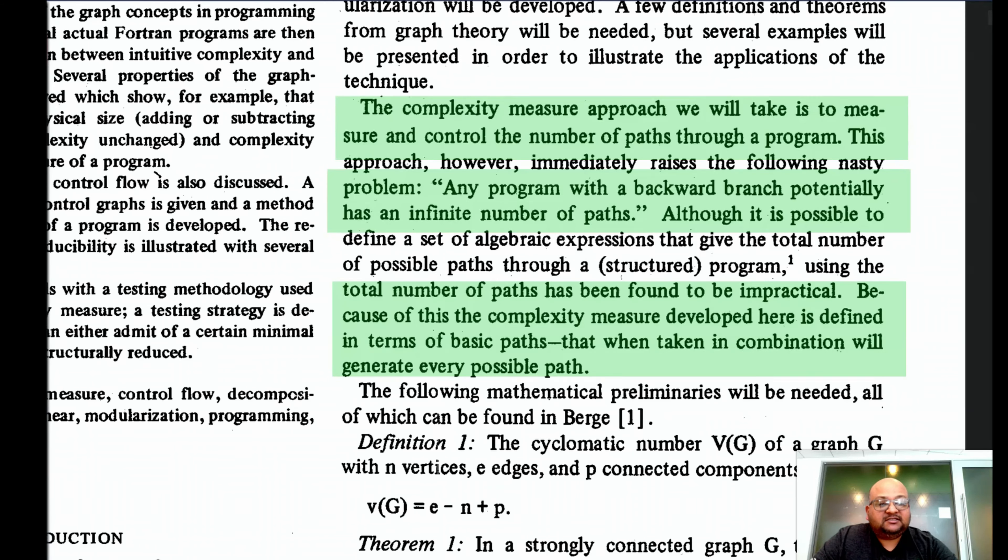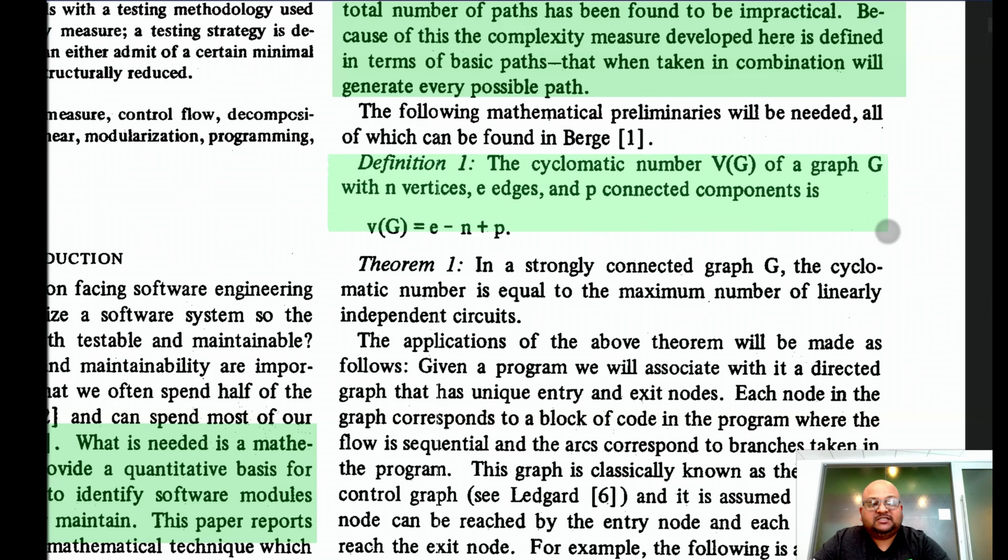These are the paths which in combination can yield all possible paths a program can take. This brings us to the definition of the cyclomatic number of a graph G. If you have n vertices, e edges, and p connected components, the cyclomatic number is e minus n plus p.